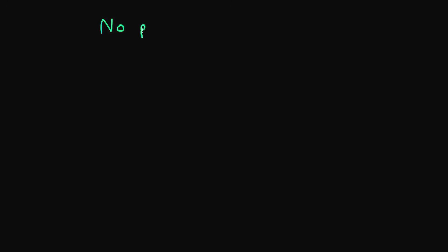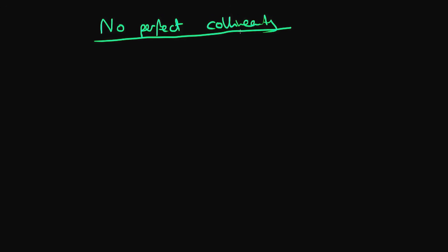Hi there. In this video I'm going to be talking about the last of the Gauss-Markov assumptions, which is that of no perfect collinearity. So what does this mean? Well, it's probably best illustrated by means of an example.